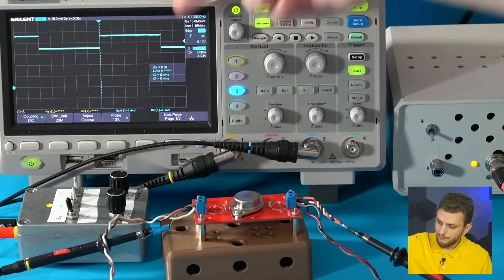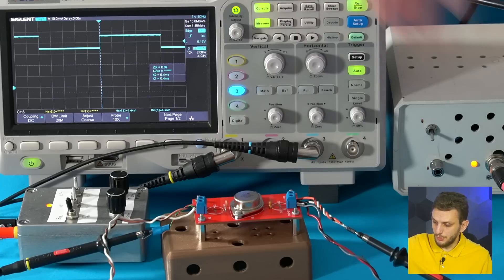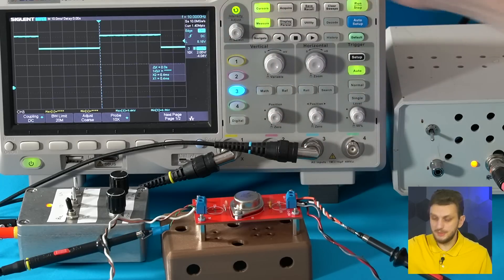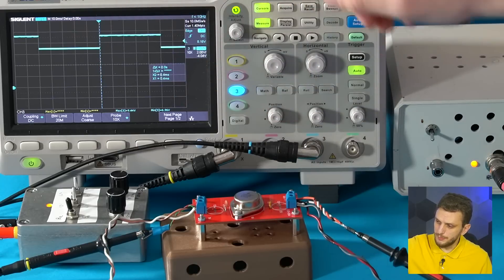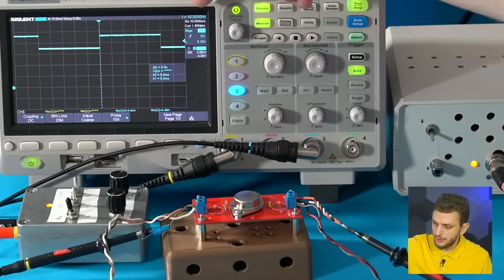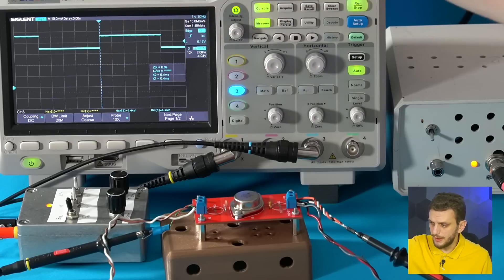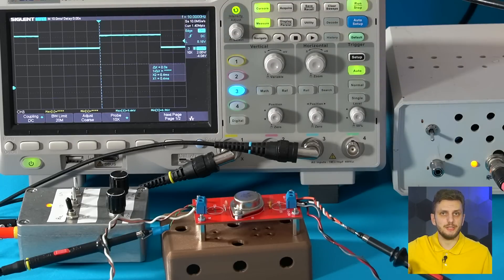And first things first you need to confirm that the pulse being applied on the supply is the correct one. So check the amplitude minimum and maximum as well as the slope. So for today's experiment I prepared a 10 kilohertz pulse that goes between about 7 and 9 volts and then the transitions have about 50 microseconds.